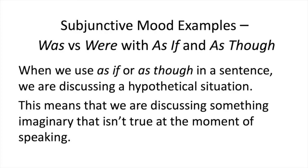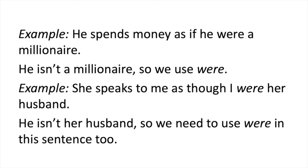Now here are some subjunctive mood examples of WAS versus WERE with AS IF and AS THOUGH. When we use AS IF or AS THOUGH in a sentence, we are discussing a hypothetical situation. This means that we are discussing something imaginary that isn't true at the moment of speaking. Now let's look at these examples. He spends money as if he were a millionaire. In the sentence above, he isn't a millionaire, so we use WERE instead of WAS.